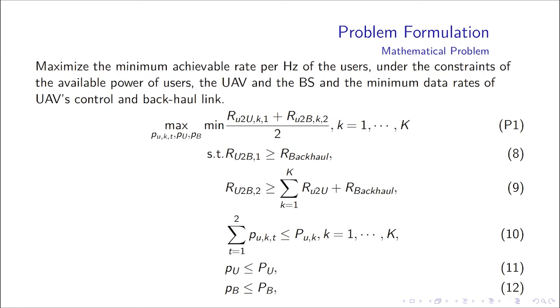Function 8 means that the UAV's control and backhaul links need to transmit with higher data rates than the backhaul. Function 9 means that at the second time slot, the UAV needs to transmit all the received data to the base station. Functions 10, 11, and 12 are the power constraints for the user's UAV and the base station.